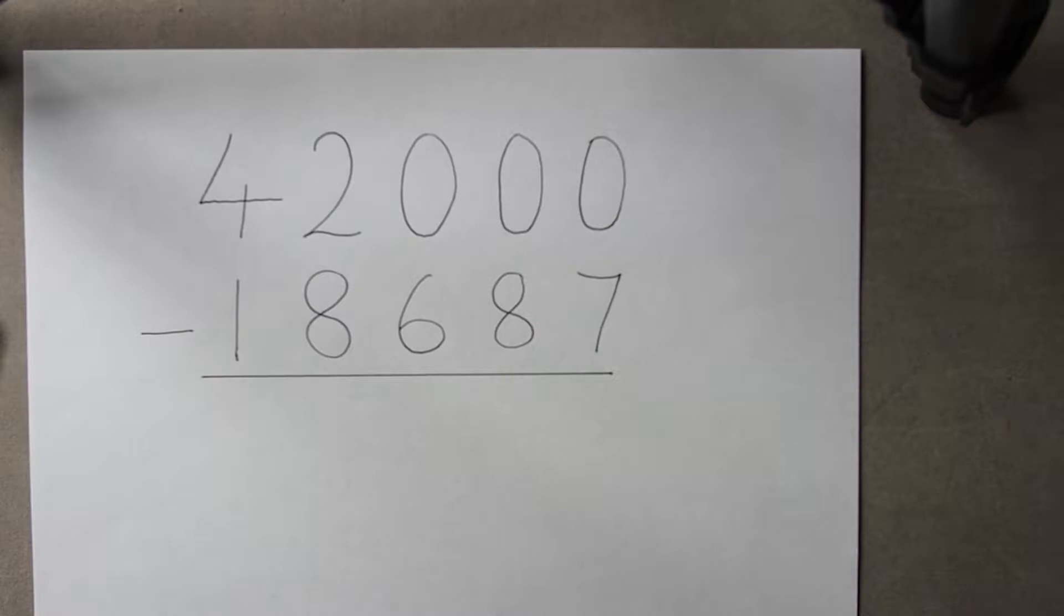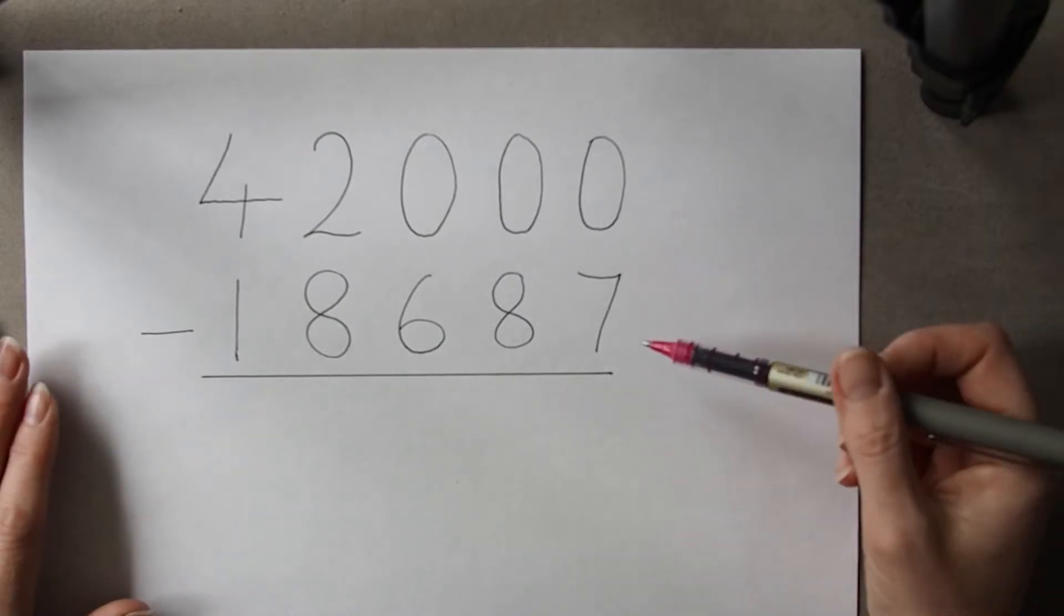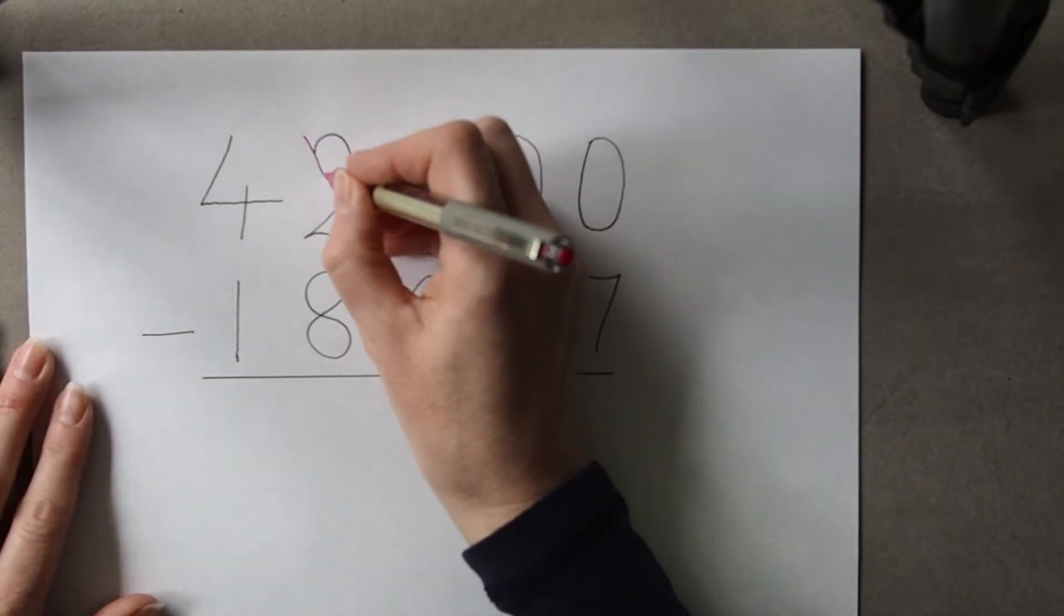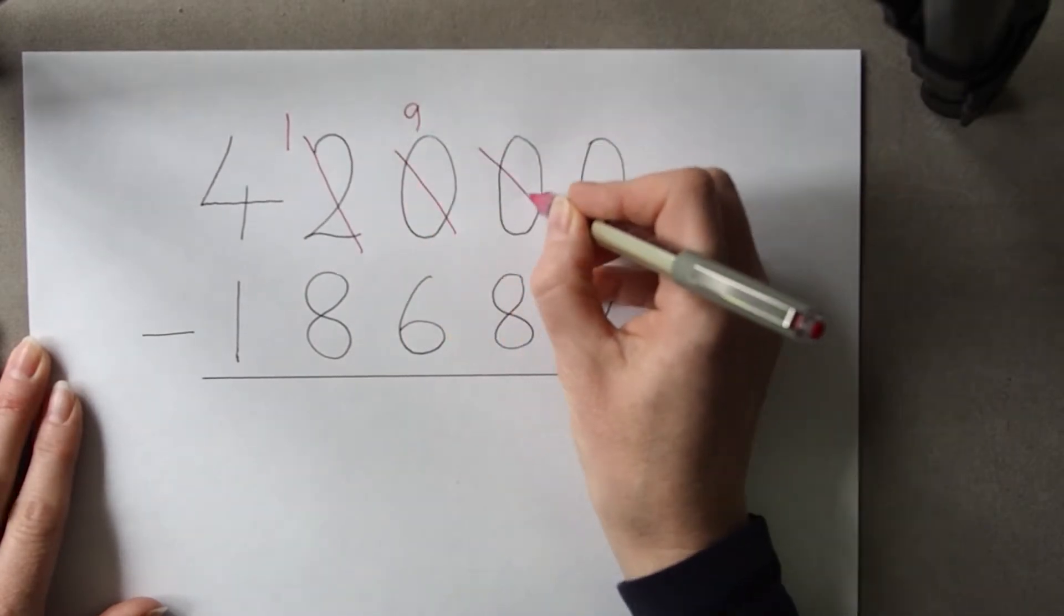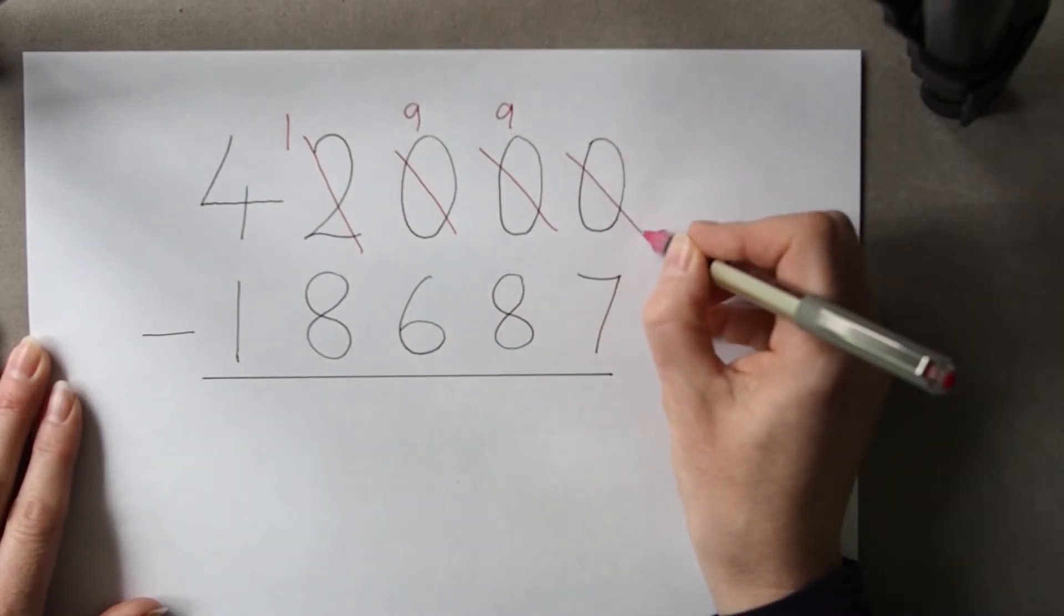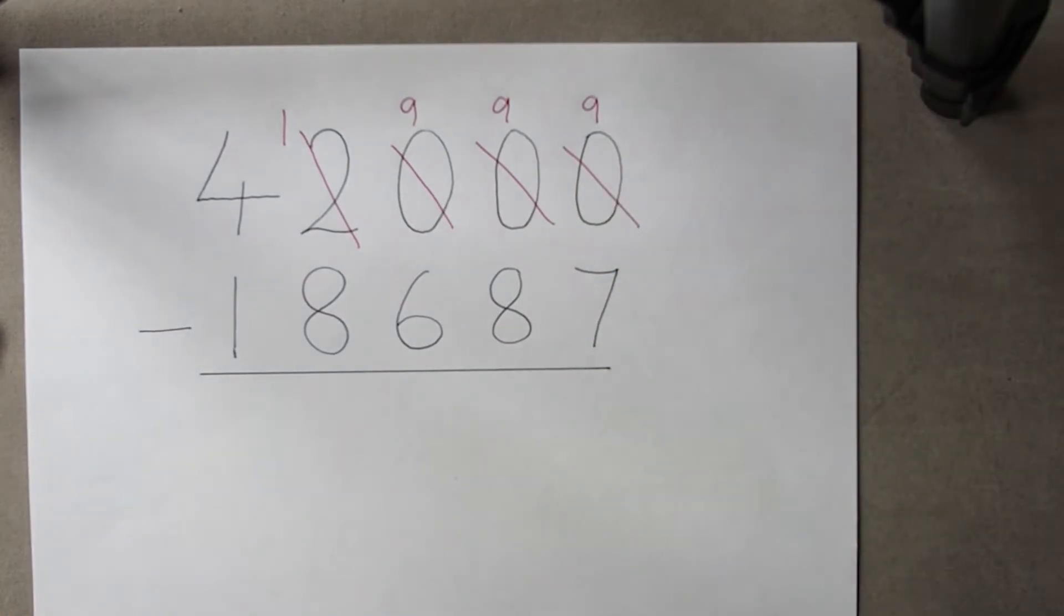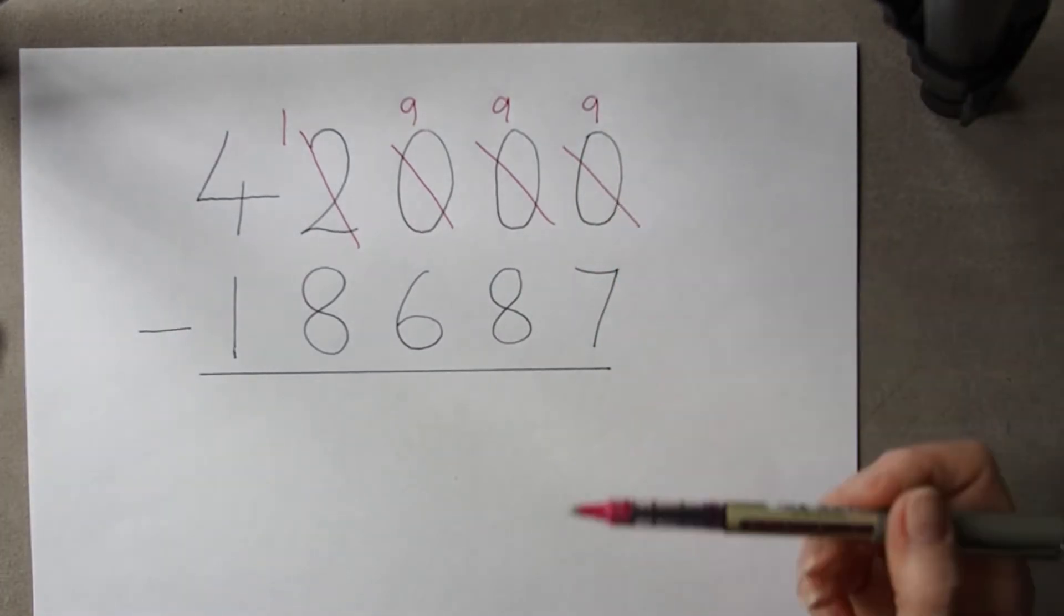particularly if we try to give them shortcuts. For instance, if we say all the zeros turn into nines, this can lead a pupil in this calculation to borrow one and turn all the zeros into nines, not realizing that this actually stays as a zero.